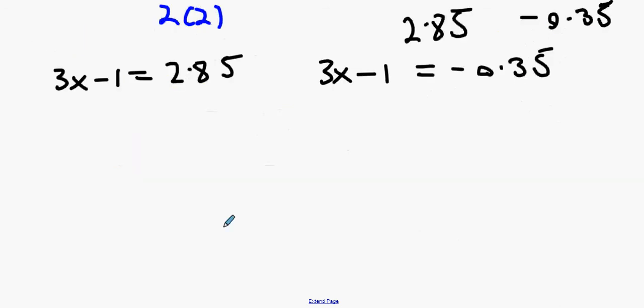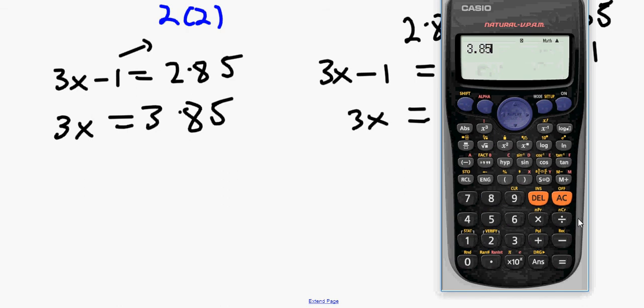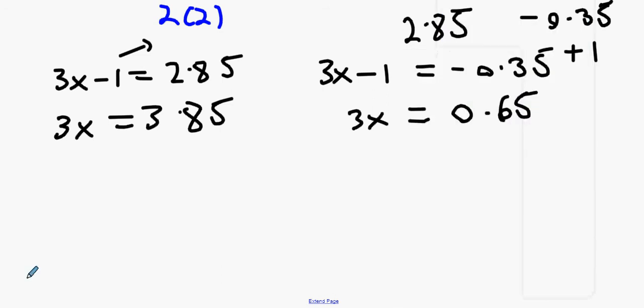And 3x minus 1 equals minus 0.35. Let's move things over. What happens when you move minus 1 over the other side? And what's minus 0.35 plus 1? 0.65. Now, you've got to divide them both by 3. So, 3.85 divided by 3 is 77 over 60 or 1.28. So, x equals 1.28.